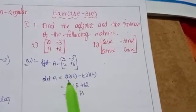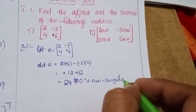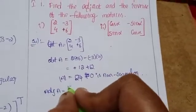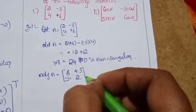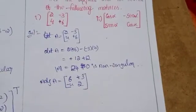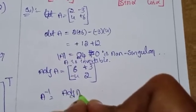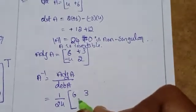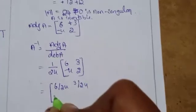For the first one, a 2x2 matrix, find det(A). It is not equal to 0, so it is non-singular. Adjoint A equals — replace to get 6, 2, minus 4, 3. A is invertible. A inverse equals adjoint A divided by det(A). The det value is 1 by 24 into adjoint A: 6, 3, minus 4, 2.